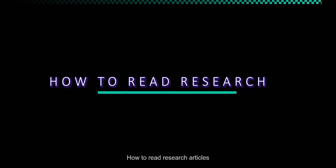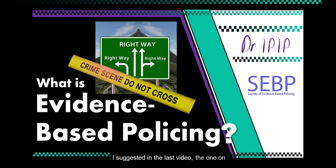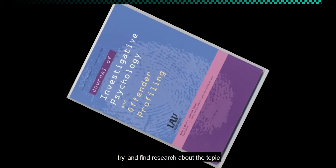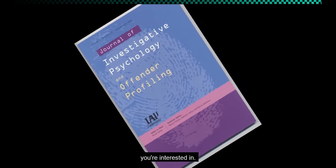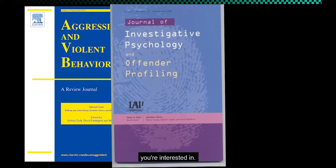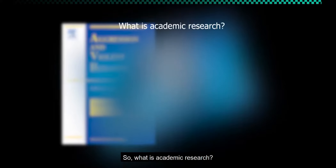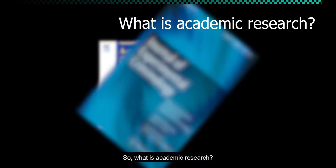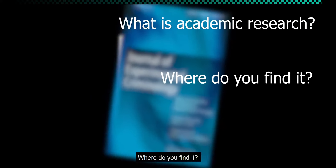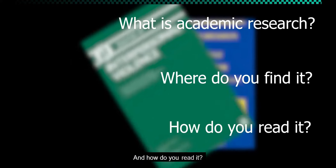How to Read Research Articles. As I suggested in the last video, the one on evidence-based policing, you should try and find research about the topic you're interested in. So, what is academic research, where do you find it, and how do you read it?